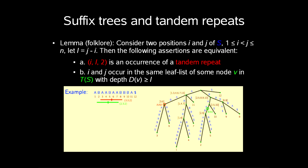The next lemma we can use is where we consider two positions i and j of S where 1 ≤ i < j ≤ n. We let l equal j minus i. Then the following assertions are equivalent: a. (i,l,2) is an occurrence of a tandem repeat. b. i and j occur in the same leaf list of some node v in T with depth D(v) ≥ l.